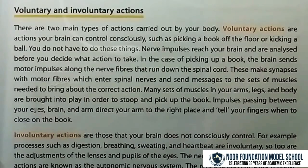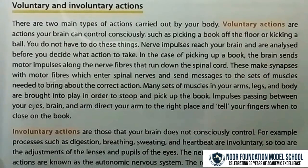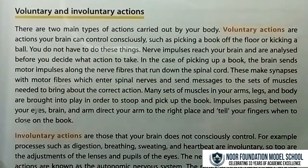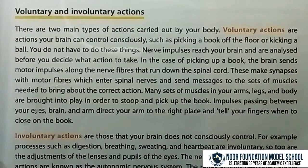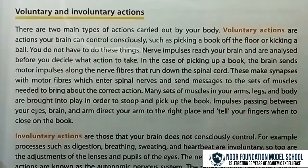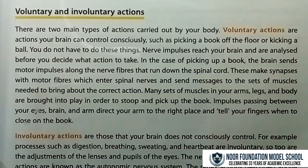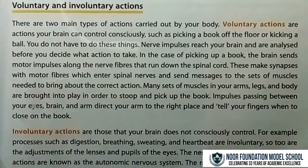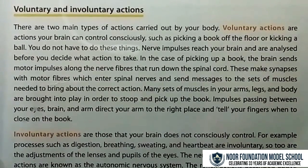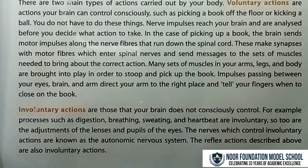You do not have to carry out voluntary actions automatically. Nerve impulses reach your brain and are analyzed before you decide what action to take. In the case of picking up a book, the brain sends motor impulses along nerve fibers that run down the spinal cord. These make synapses with motor fibers which enter spinal nerves and send messages to the sets of muscles needed to bring about the correct action. Many sets of muscles in your arms, legs, and body are brought into play.